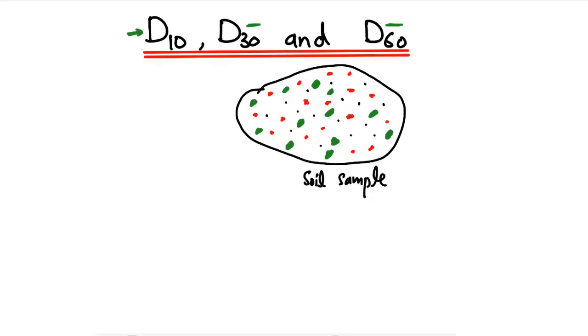Now we have a soil sample with different particle sizes. How can we define D10, D30, and D60? Let's suppose our D10 for this soil sample is 5 millimeters.